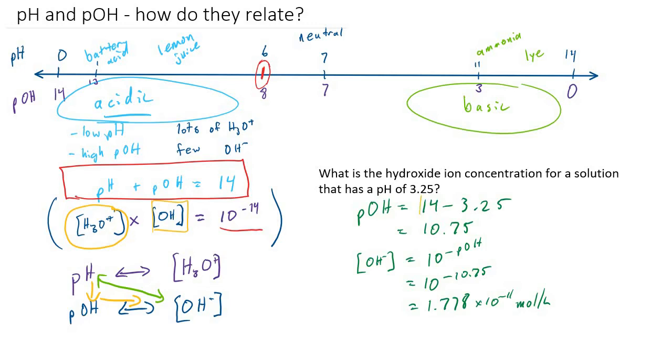So for significant digits, first of all, we're going to assume that this 14 number is an exact number. So it kind of has an infinite number of significant digits. So when we subtract in this step, we have to maintain the same number of decimal places as our less precise piece of information. So that's maintaining two decimal places. So that means our 10.75 has two decimal places. And since it's a pOH number, that means only the digits after the decimal are significant. So it also has two significant digits. So applying that to our final answer, we would get about 1.8 times 10 to the negative 11 moles per liter with two significant digits there as well.